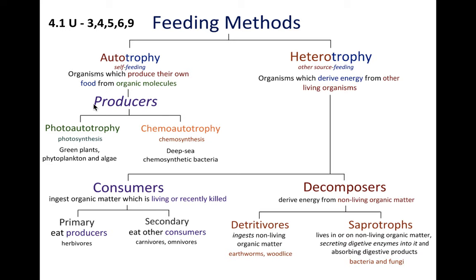Focusing on autotrophy first: producers, also called autotrophs, have two types. Photoautotrophy means they do photosynthesis, using sunlight to make energy — green plants and phytoplankton are examples. Chemoautotrophy involves using other chemicals besides light to make energy through chemosynthesis. Organisms living in deep, dark regions of the ocean use chemicals released from deep-sea vents to make their own energy — these are often bacteria.